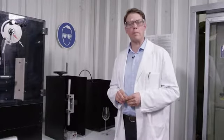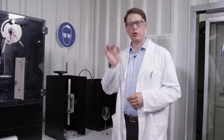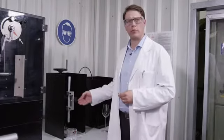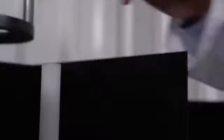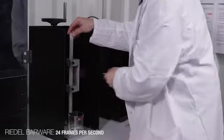The second test is called the Rim Impact Test. A metal ball is dropped from a height of 200mm onto the rim of the glass. We use this test especially on our barware items to ensure the chipping resistance of the rim.